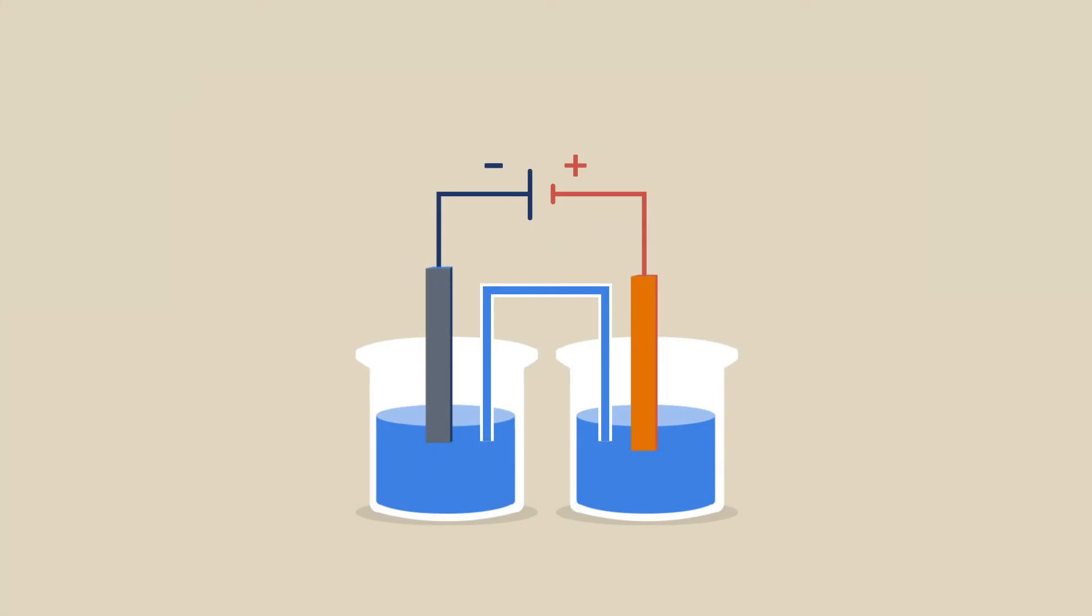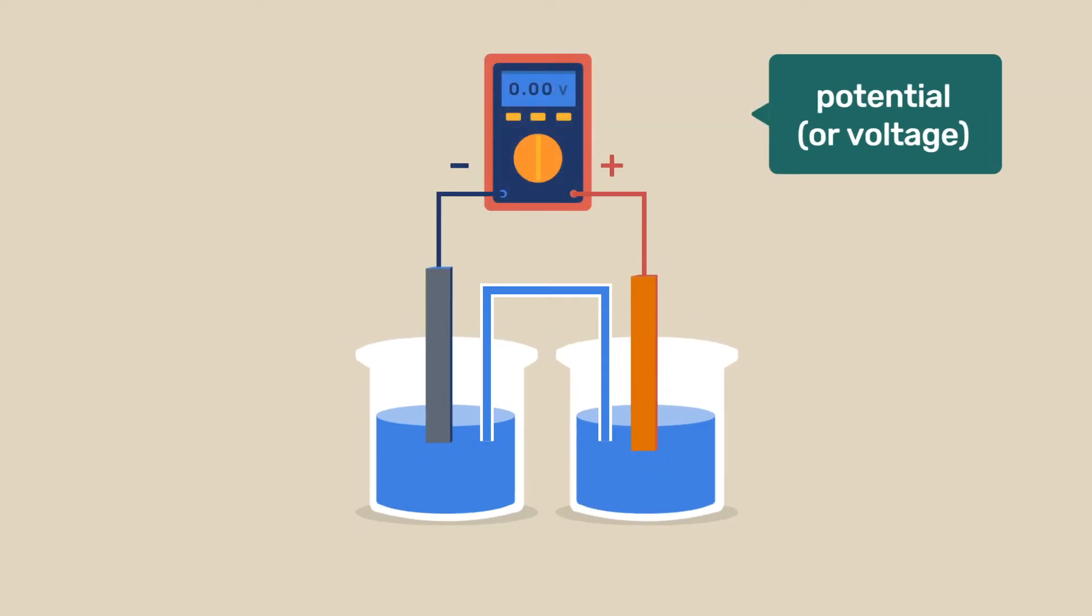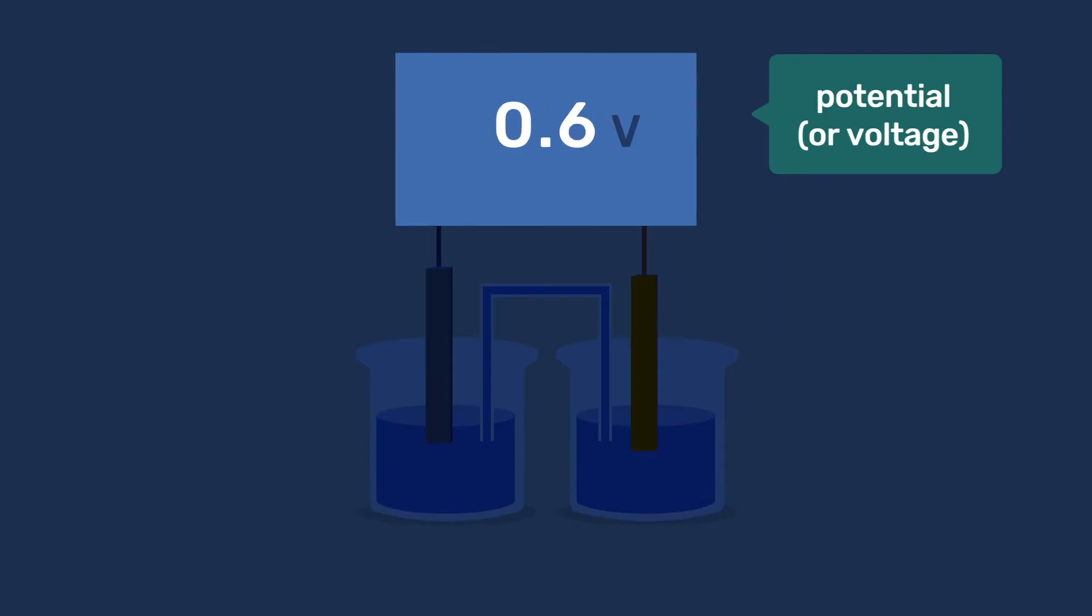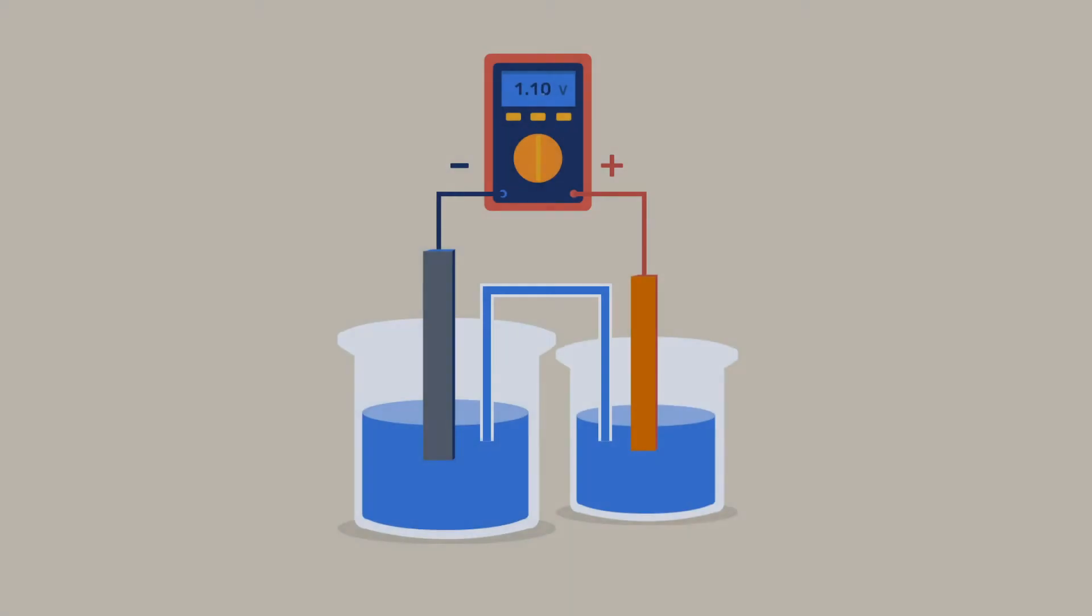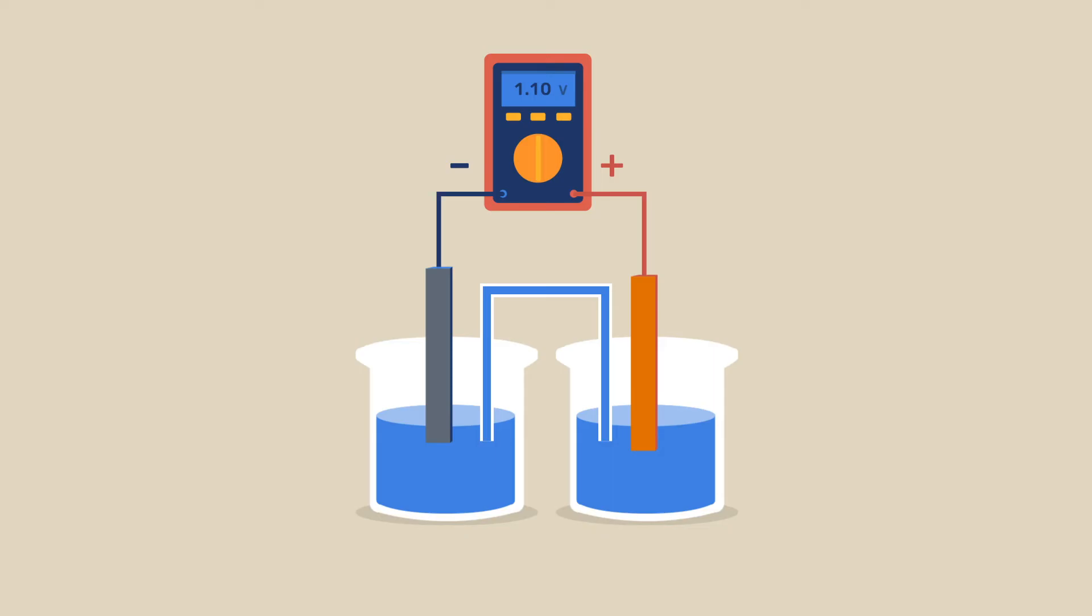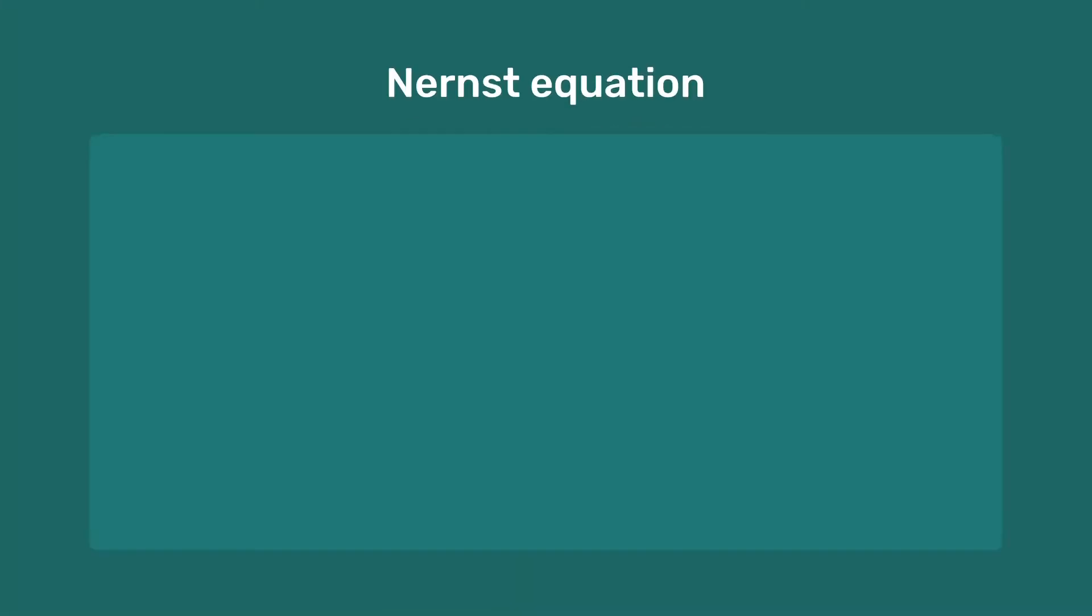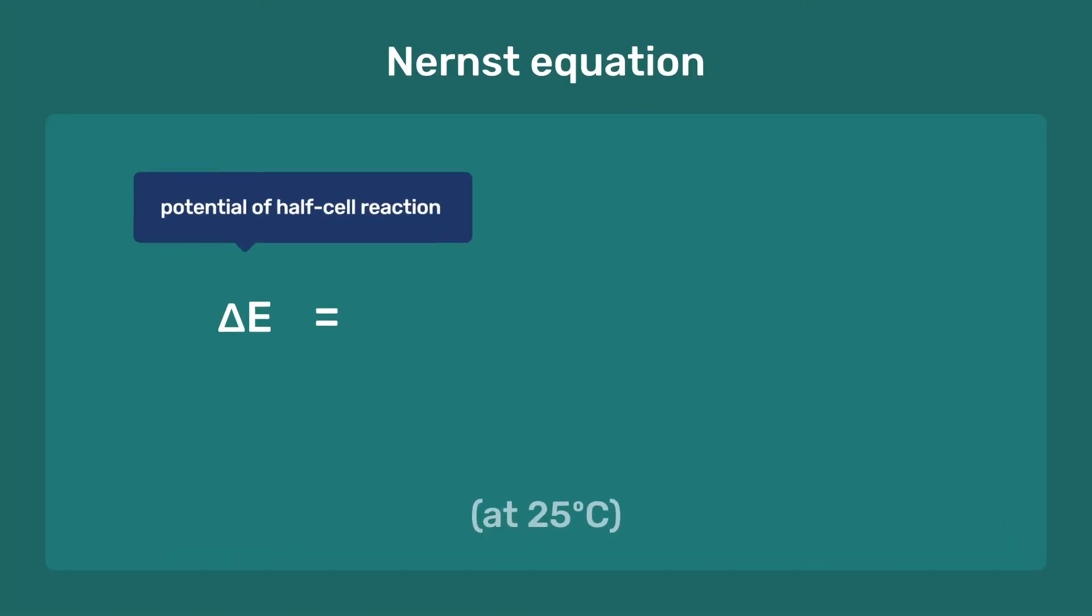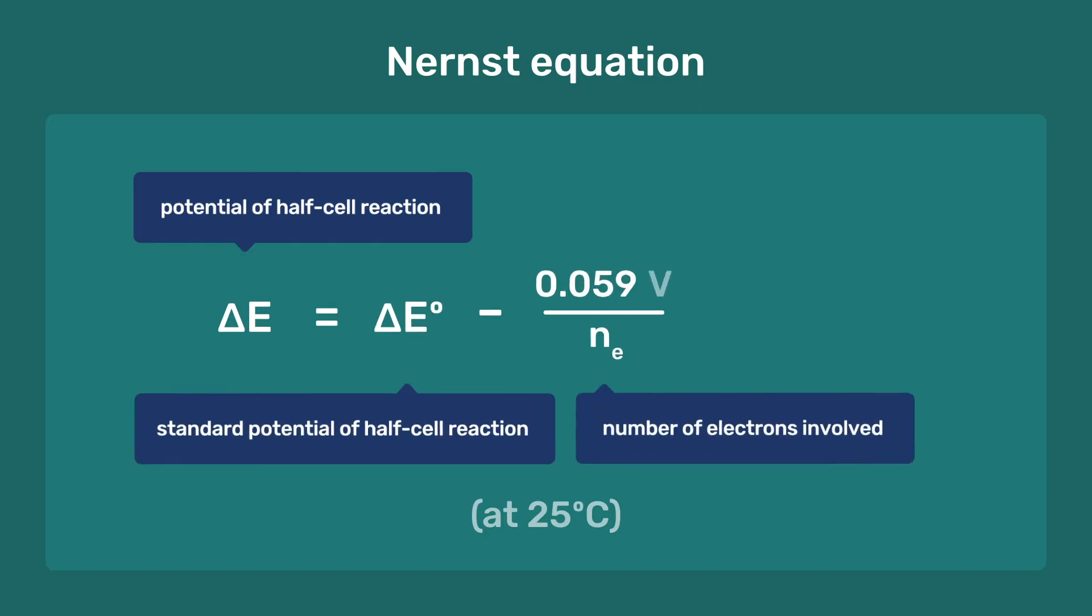When two half-cells are combined, a voltage is produced. The maximum voltage before any dissipation takes place is the difference between the two half-cell potentials. The half-cell potential can be calculated with the Nernst equation, which relates the half-cell potential to the potential at standard conditions, the number of electrons involved, and the reaction product Q.